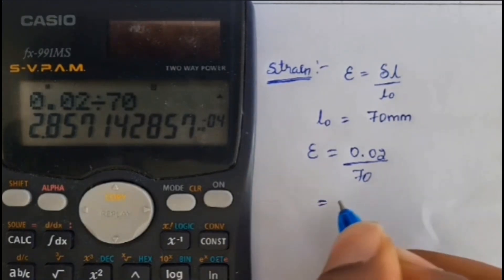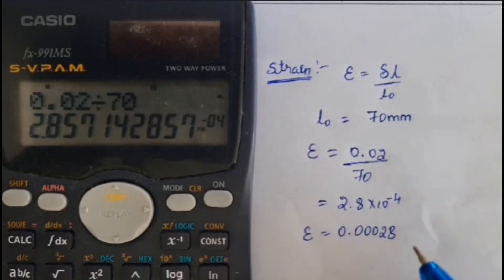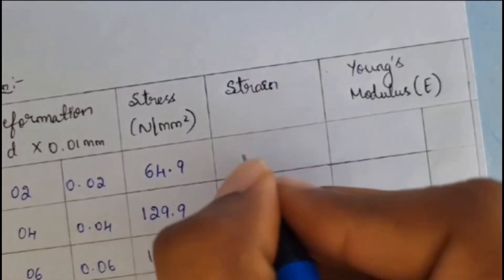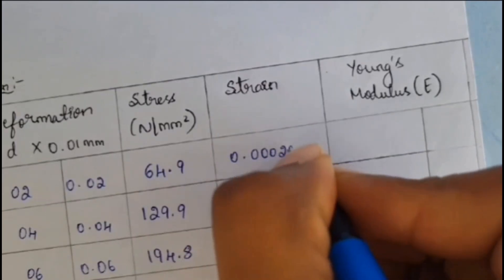Next, we will be finding the value of strain. For strain, we will be having the formula, Epsilon is equal to change in length divided by original length. Original length we will be knowing as 70mm. So we will be finding strain value for first reading. First reading, we will be having the value of change in length. That is 0.02 divided by 70. We will be getting as 2.8 into 10 to the power of minus 4. That we can also write as 0.00028. So for first reading, we will be getting 0.00028.